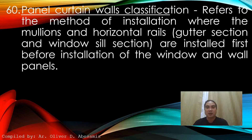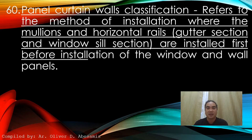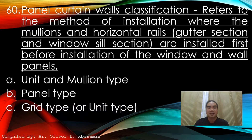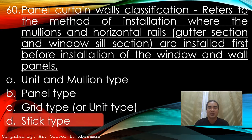Panel curtain walls classification. Referred to the method of installation where the mullions and horizontal rails, gutter section and windowsill section are installed first before installation of the window and wall panels. A. Unit and mullion type. B. Panel type. C. Grid type or unit type. D. Stick type. Answer: D. Stick type.